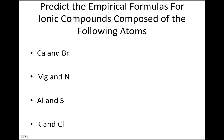Let's try predicting the empirical formulas for the following ionic compounds. If we're forming an ionic compound from calcium and bromine, we know that calcium forms ions with a positive two charge — we can predict this because calcium is in the second column of the periodic table. Bromine forms ions with a negative one charge because bromine is in the seventh column. So the empirical formula will be CaBr₂.